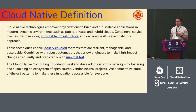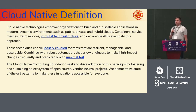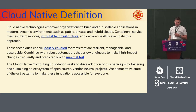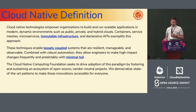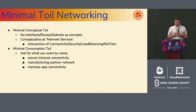This is the cloud native definition as defined by CNCF — you probably saw it at the keynote. It's very well written, so please go check it if you haven't. We've outlined a few points that we think are very important for networking done in the cloud native way: immutable infrastructure, loosely coupled systems, and minimal toil. No one really wants to do more work than they should.